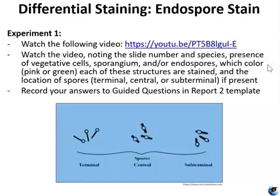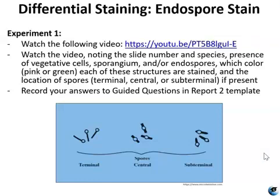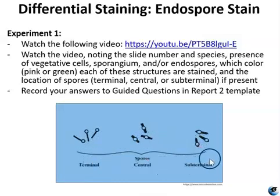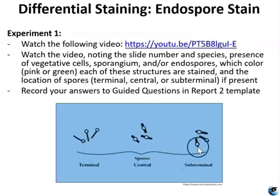The complete video is linked in the description and is worth watching for more detail — just keep in mind the correction about the decolorizer. You will also practice identifying the location of endospores — terminal, central, or subterminal — as this characteristic is often used in identifying Bacillus and Clostridium species. It can be very difficult to distinguish subterminal from terminal; look closely to see if any sporangium remains on the other side of the spore.